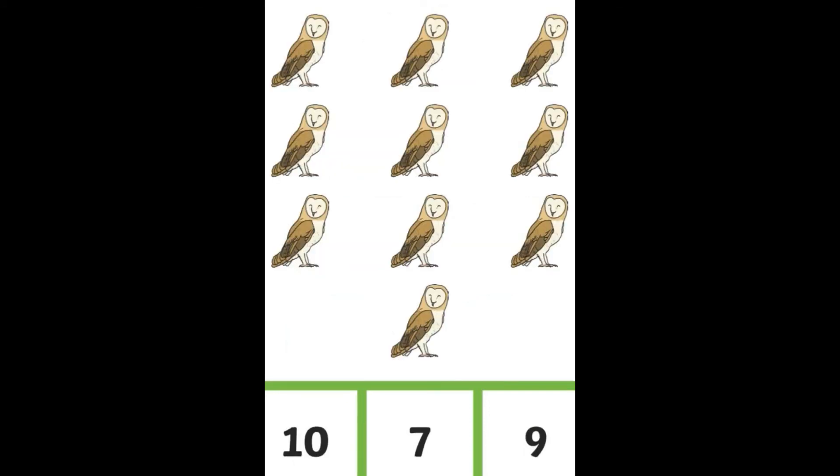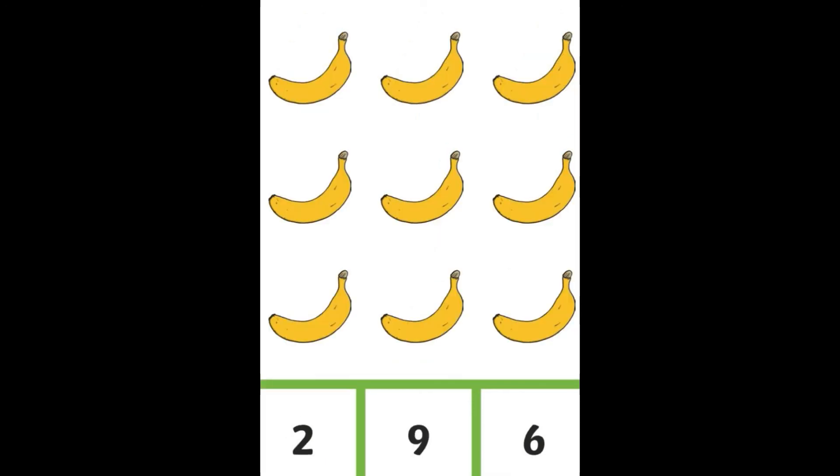How many owls? Is it ten, seven, or nine? There are ten. How many bananas? Is it two, nine, or six? There are nine bananas.